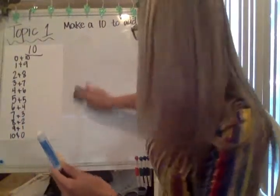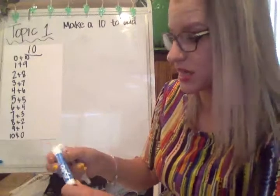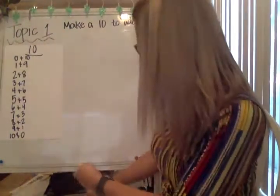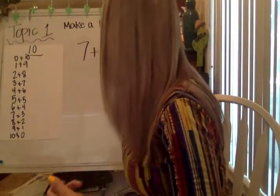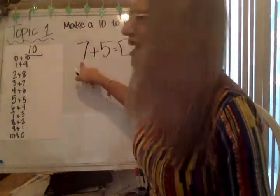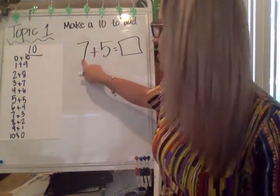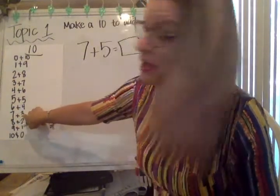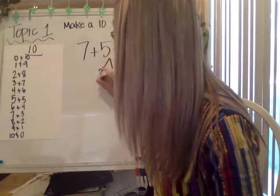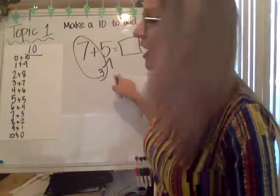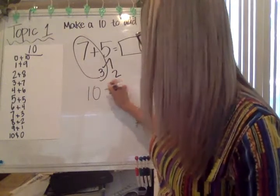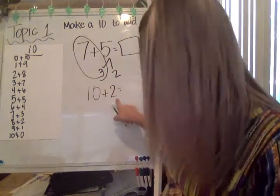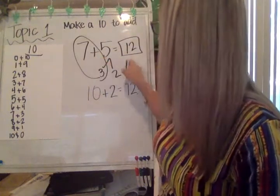Remember, all of these equations have sums less than 20 — with topic one, we're not having really big numbers. So what if my equation is seven plus five? I'm picking seven because it's the greater number — seven needs three more to get to the next 10. So I'm going to take the three out of this five, and that leaves me with two, because three plus two equals five. So seven plus three is 10, and then I can't forget about this two — 10 plus two is 12. The sum of seven plus five is 12.